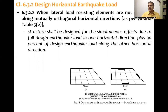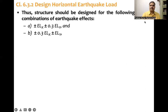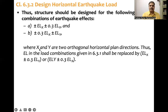Consider a plan where frames and structural walls are not aligned in orthogonal directions. In that case, the code suggests the structure shall be designed for the following sets of combinations of earthquake effects: ±EL-X ± 0.3·EL-Y, and ±EL-Y ± 0.3·EL-X. So the earthquake load in the X direction is replaced by EL-X ± 0.3·EL-Y, and similarly EL-Y is replaced by EL-Y ± 0.3·EL-X.